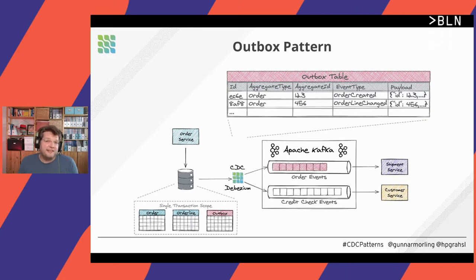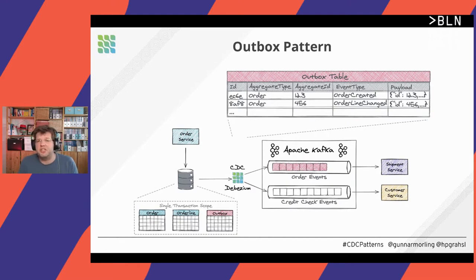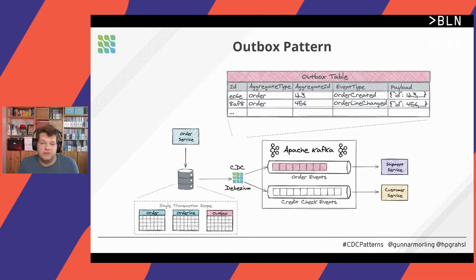All of this is applied using at-least-once semantics. Debezium extracts changes from the transaction log, and in case of failure it might re-read a change it already processed. So consumers need to be prepared to handle duplicates, but we will never miss anything — we'll never end up with an inconsistent situation where the database was updated but consumers weren't notified. That's the outbox pattern.